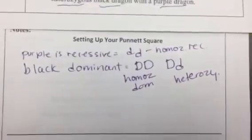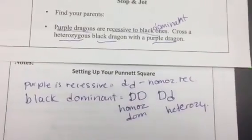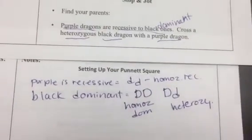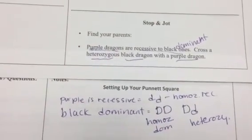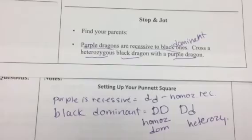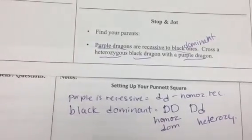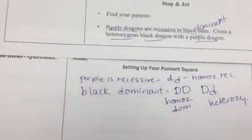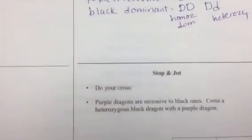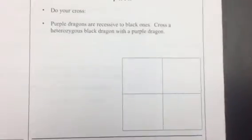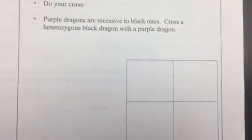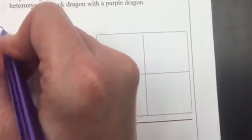So we're halfway through it. What are our parents? One parent is heterozygous black, the other parent is a purple. So let's jump down here where we have room to do our Punnett square. So parent one and parent two.